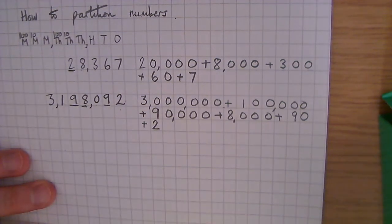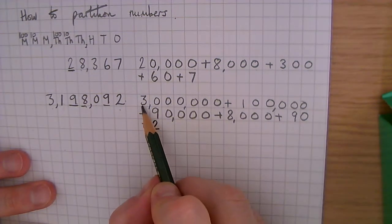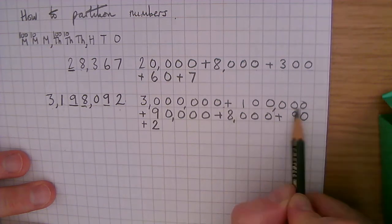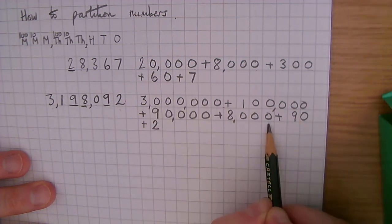So 3,198,092 is made up of three million, one hundred thousand, ninety thousand, eight thousand, ninety, and two.